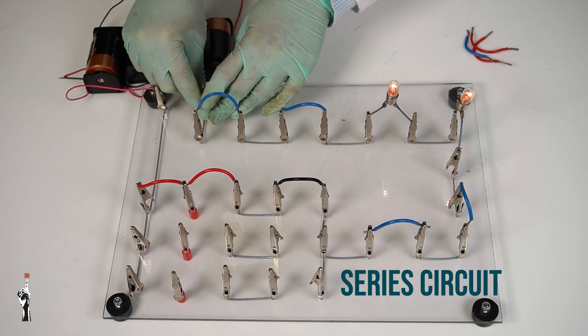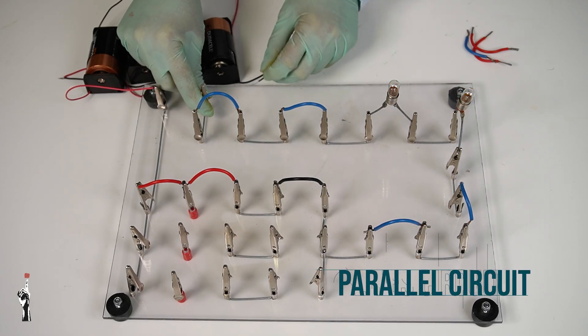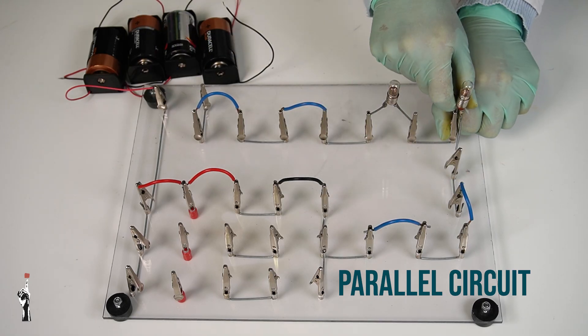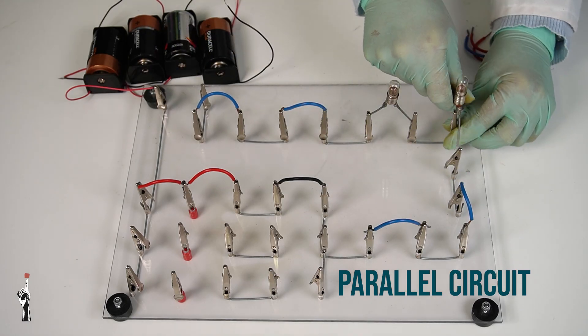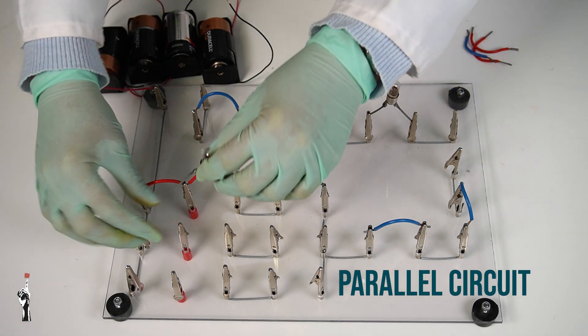Step two is going to be to build a parallel circuit. And so, what I'm going to do, I'm just going to open the circuit so that the current is not flowing. And I'm going to take one of the bulbs and I'm going to put it in its own branch. So, the two light bulbs are now in separate branches.